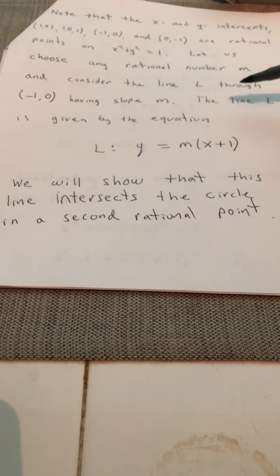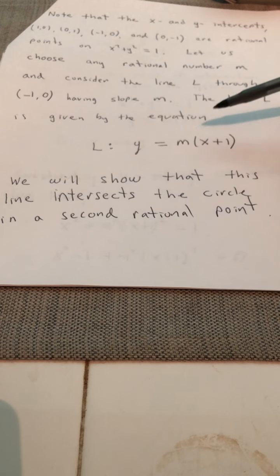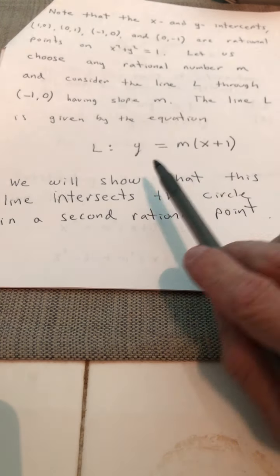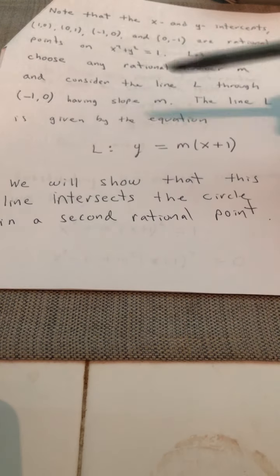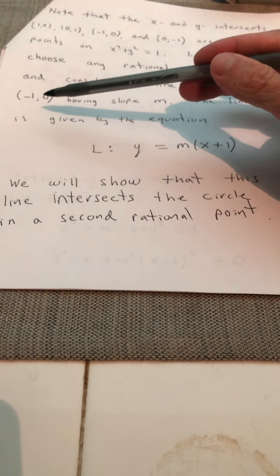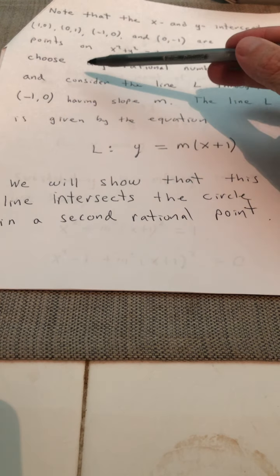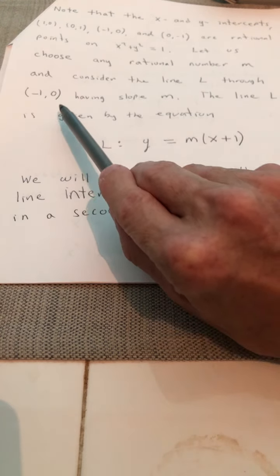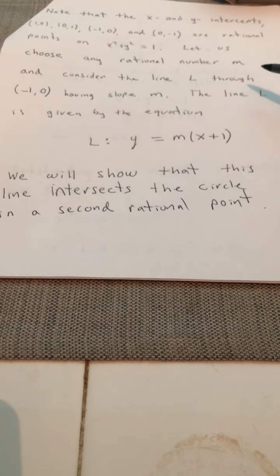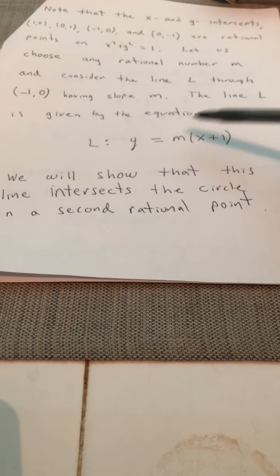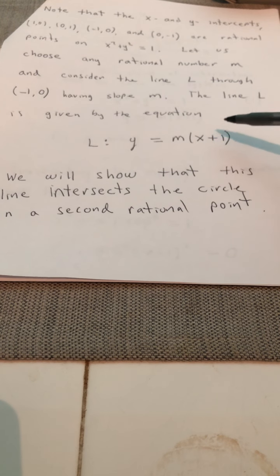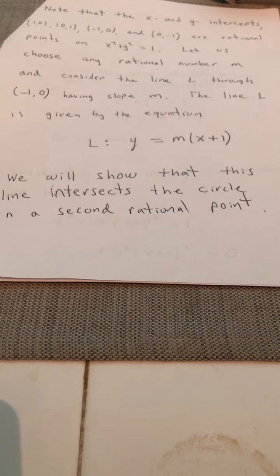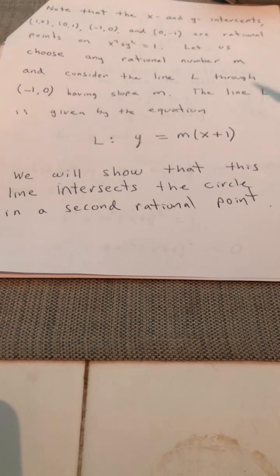So the line L in point slope form. Notice that this is point slope form because you see the point that we're starting with is negative one, zero. So y minus y1 is zero. So y minus y1 is just y. The line L in point slope form is y is equal to m times x plus one. Where do we get x plus one? Well, x plus one is x minus x1. x1 is negative one. x minus negative one is x plus one.